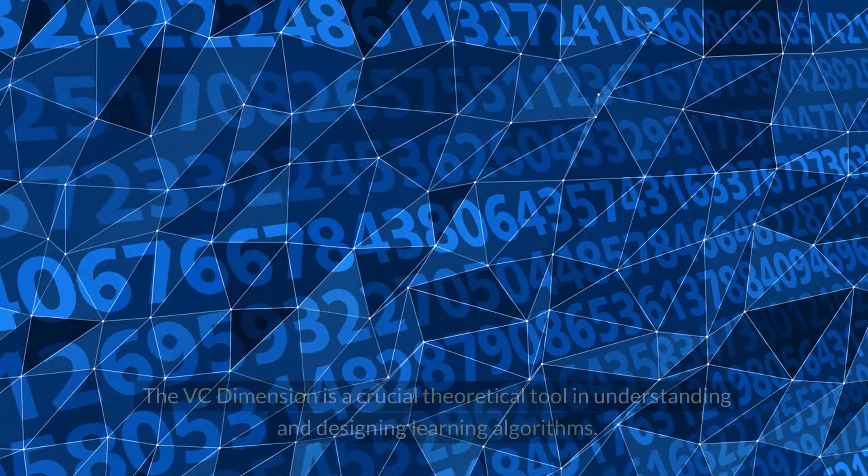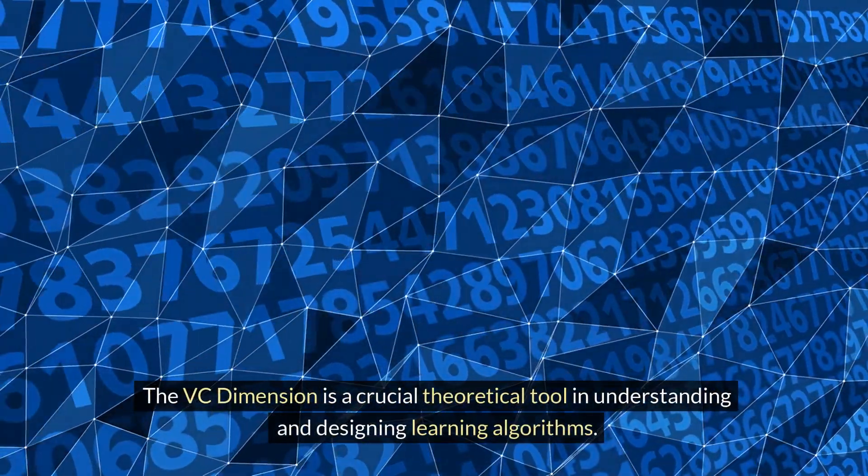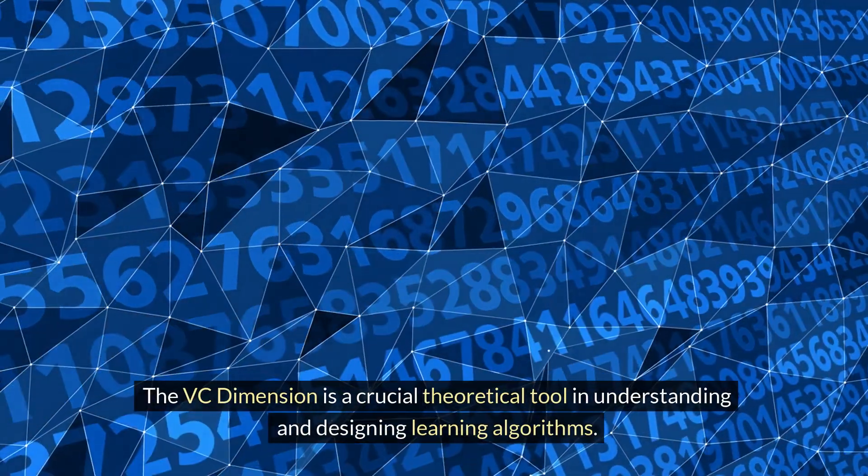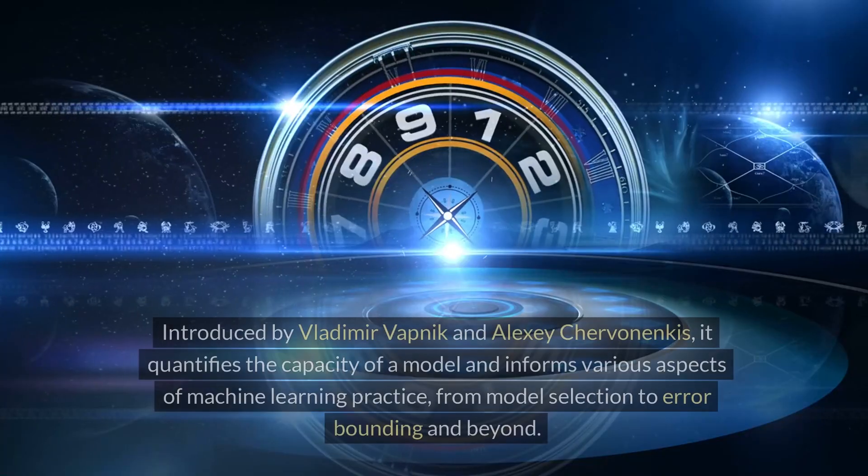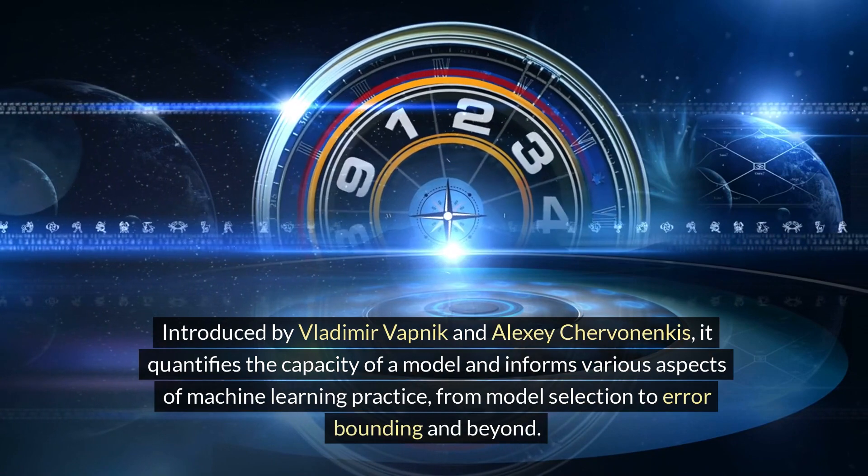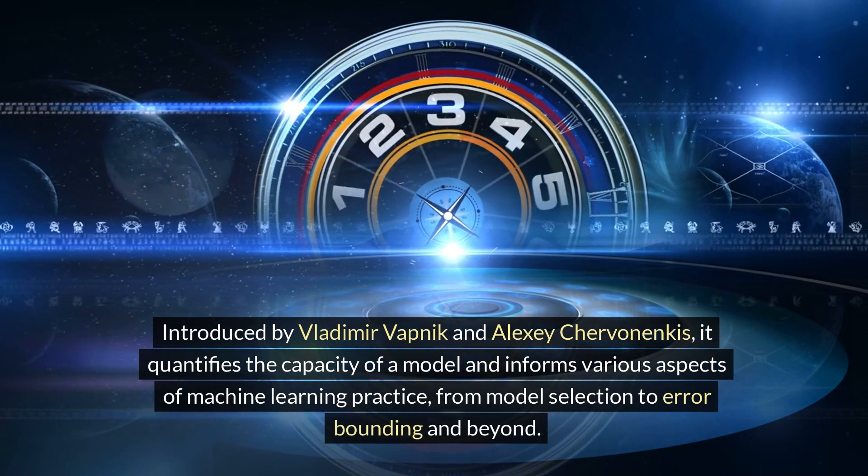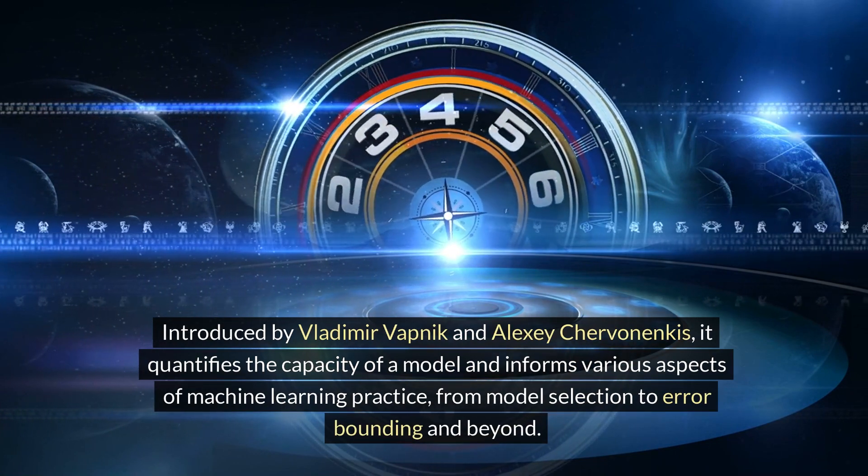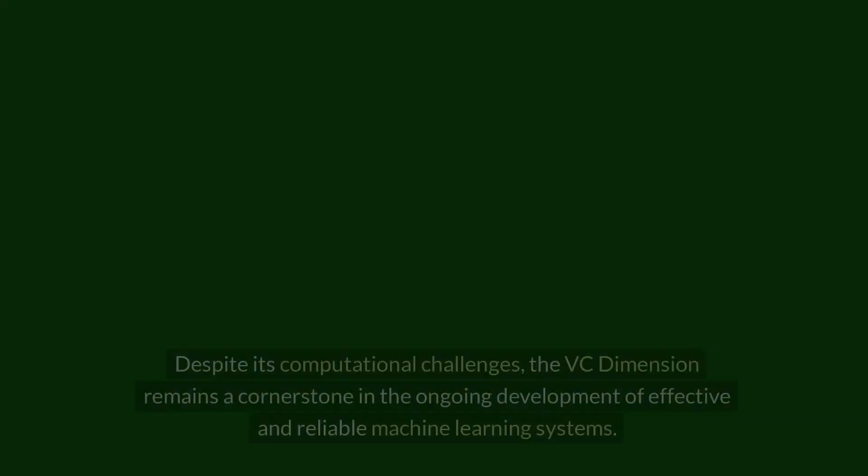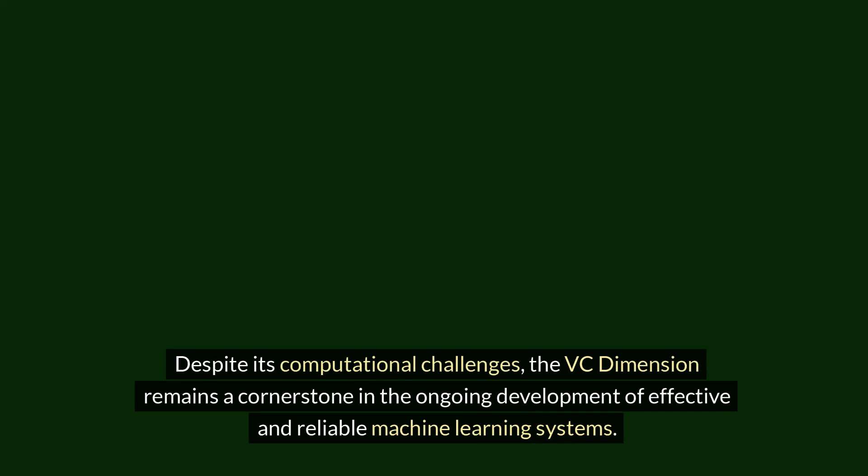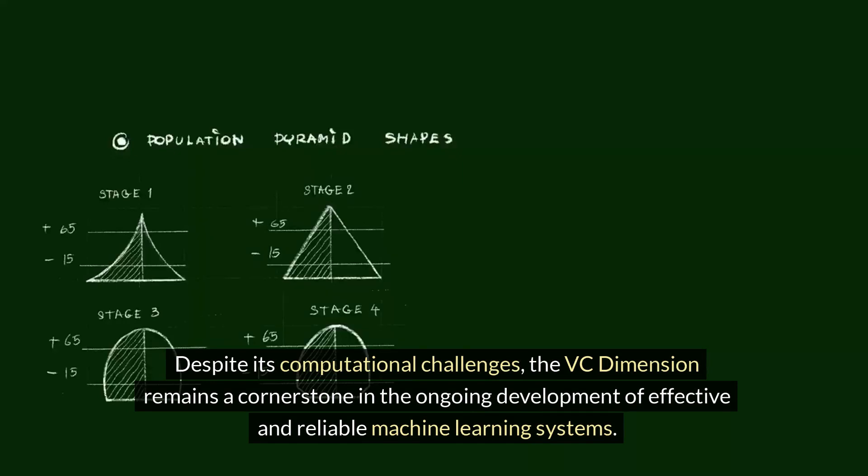Conclusion. The VC dimension is a crucial theoretical tool in understanding and designing learning algorithms. Introduced by Vladimir Vapnik and Alexei Chervonenkis, it quantifies the capacity of a model and informs various aspects of machine learning practice, from model selection to error-bounding and beyond. Despite its computational challenges, the VC dimension remains a cornerstone in the ongoing development of effective and reliable machine learning systems.